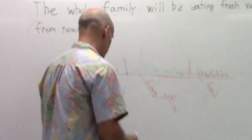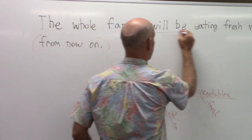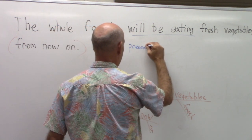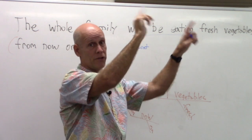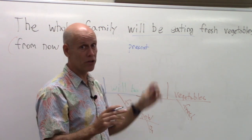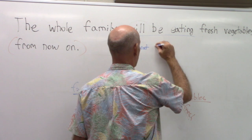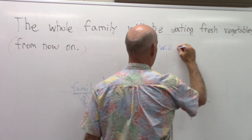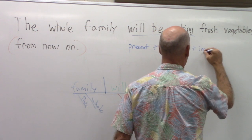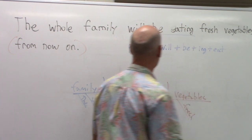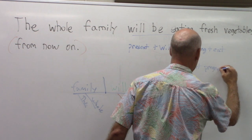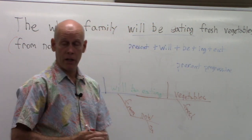Now let's do the verb expansion formula for this verb. Is it past or present? It is present. Future sentiments are expressed with modal auxiliaries, and will is the present form — we just have to live with that. Is there a modal? Yes, will is the modal auxiliary. Is there have plus -en? No. Is there be plus -ing? Yes. And the main verb is eat. If there's an -ing, it's progressive — so the verb form is modal progressive.